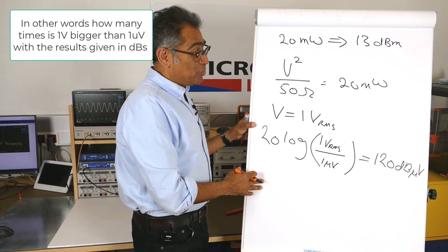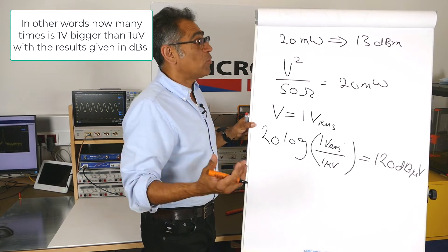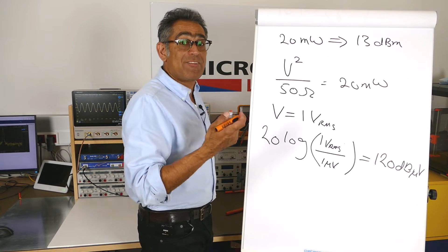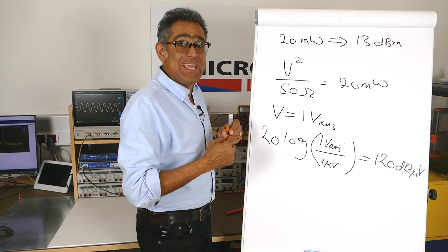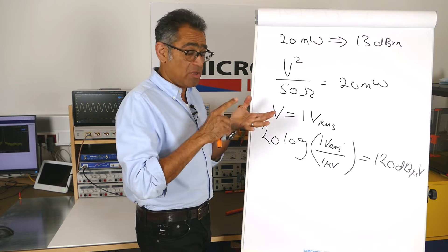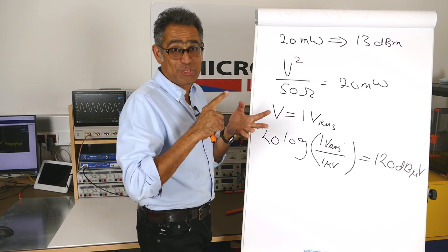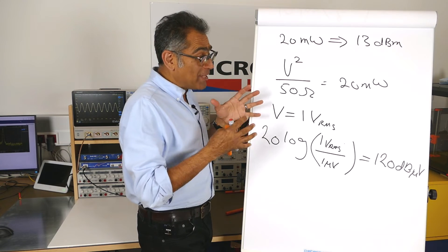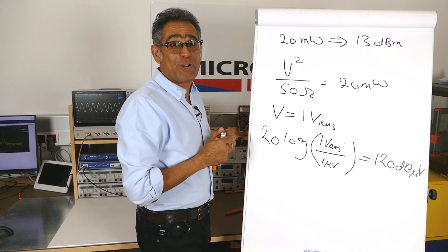So what we are going to do now is we are going to go to the lab, we're going to get our Bode 100 to generate a 13 dBm signal, that would be 1 volt, and we're going to measure it on our oscilloscope, and we're going to measure it on the spectrum analyzer, and hopefully we're going to show how all of this works in real life.